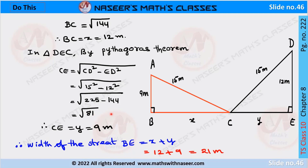Taking the square root, CE equals 9 meters. So the total width of the street B equals X plus Y, where X is 12 and Y is 9, giving a total of 21 meters.